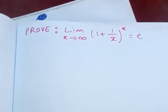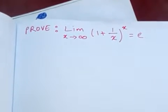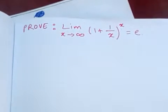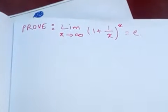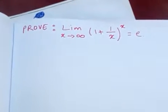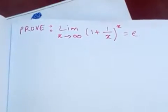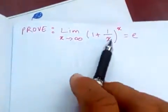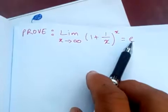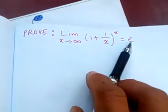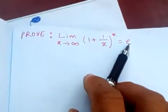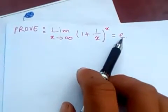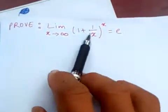Hello friends, today I'm going to prove the limit as x tends to infinity of (1 + 1/x) to the power x is equal to e. This limit is equal to e, where e means the Euler number.